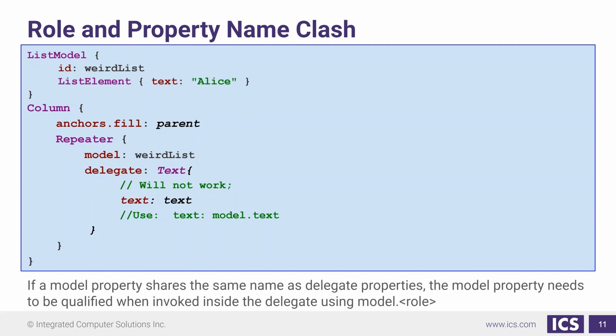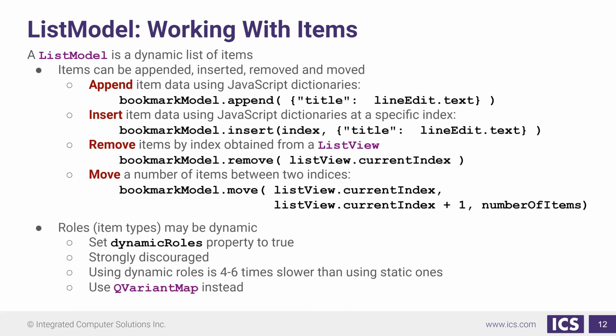It's good practice to always use model dot before the role that you want to display, because we want to fully qualify. The list model is dynamic and has several functions that can be used with it. We have an append, which will take a JavaScript dictionary including the roles and values for the model's item.